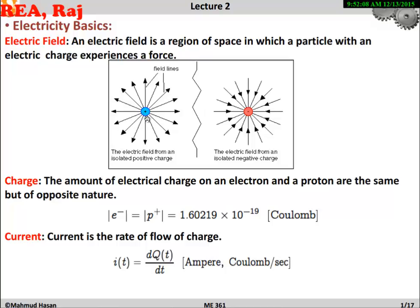So what is charge? I am saying this charge is 1.60219 multiplied by 10 to the power minus 19 Coulomb. So what do you mean by the charge?